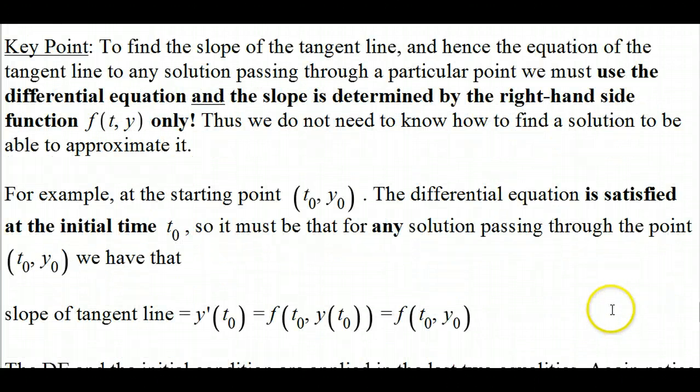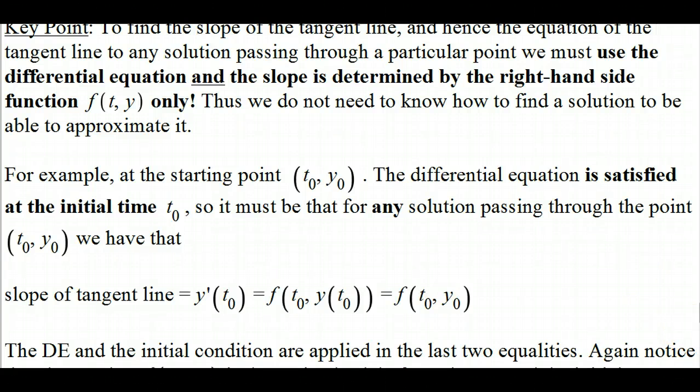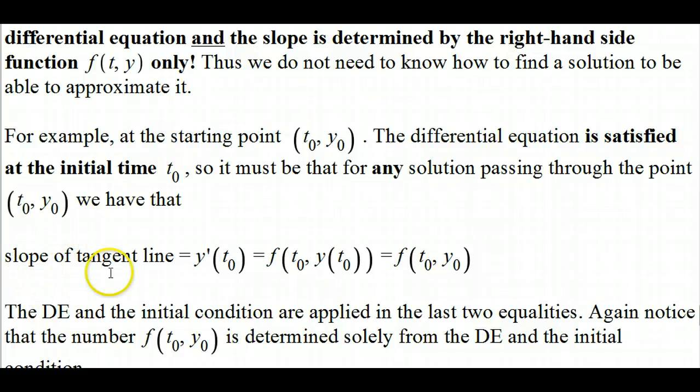Here's an example. Suppose you want to take your starting point, t sub 0, y sub 0. The differential equation is satisfied at that initial time. It's something that we don't use all the time when we're studying differential equations, but it's a key point. So it must be the case for any solution passing through that point, the differential equation is satisfied, and therefore the slope of your tangent line is going to equal the derivative of your solution. We're not saying we know the formula, but that solution has to satisfy the differential equation, and therefore that derivative is equal to f of t sub 0 and y of t sub 0. By the initial condition, this is equal to your prescribed initial value, y sub 0.